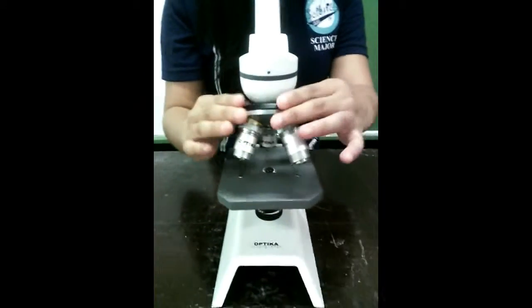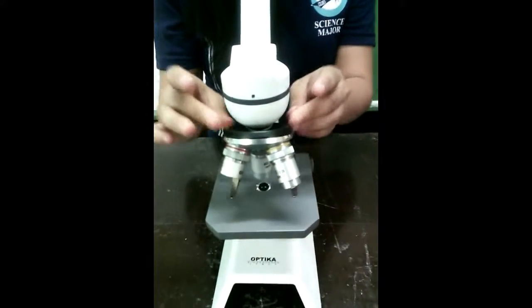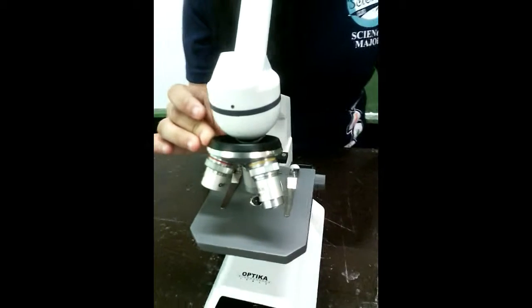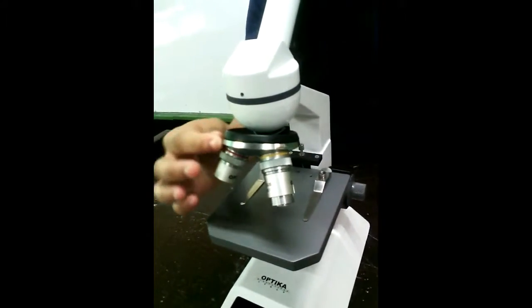The revolving nose piece is where the objectives are secured. Turn to select the appropriate objective. The lenses must be clicked in place for the field to be visible.